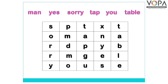बच्चों, हमें यह जो grid सामने दिया गया है, इसमें खड़ी तरतीब में, आड़ी तरतीब में, तिरछी तरतीब में — जिस तरह भी हो — हमें Man word की spelling M-A-N को तलाश करना है। तो बच्चों आओ देखो, हमें M-A-N, Man word मिला यहाँ पर और उसे इस तरह circle करना है। Man के बाद word है Yes — तलाश करो बच्चों, Yes कहाँ पर है।